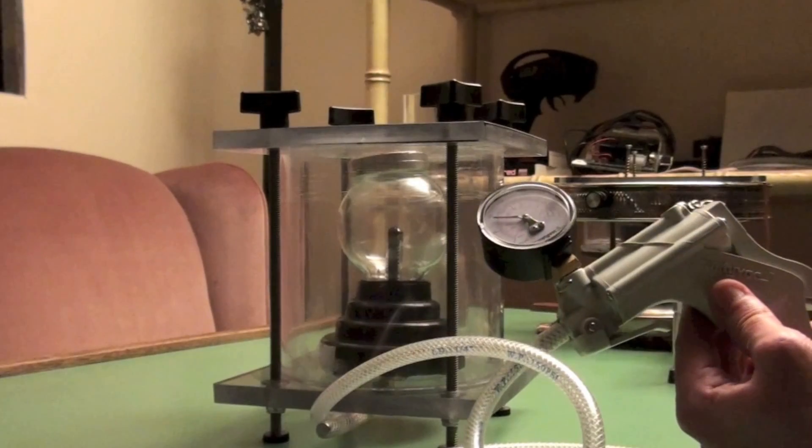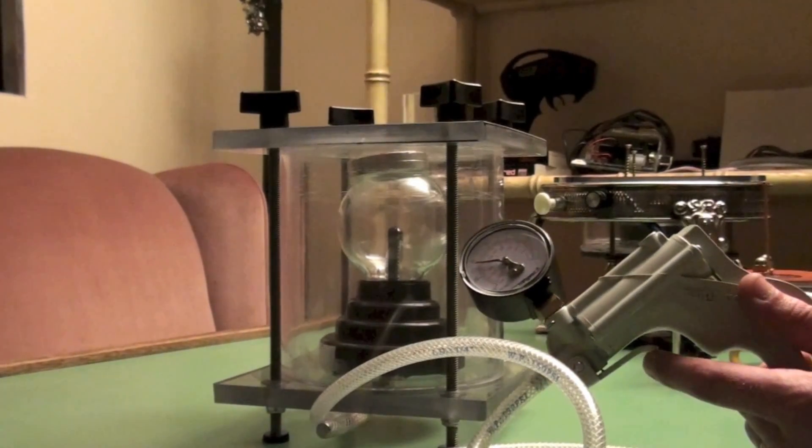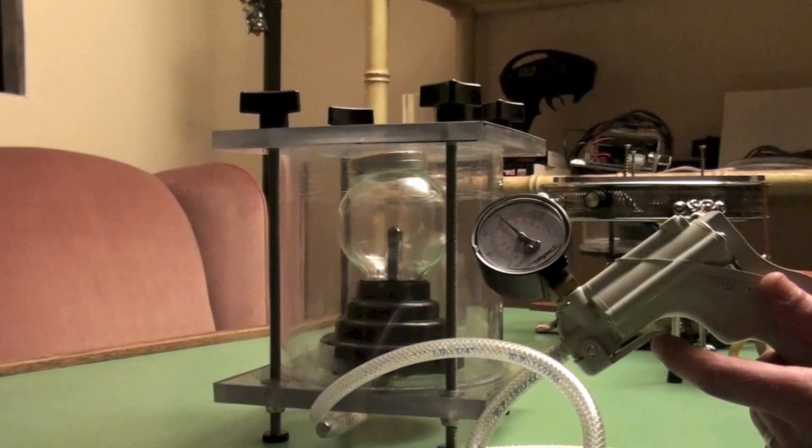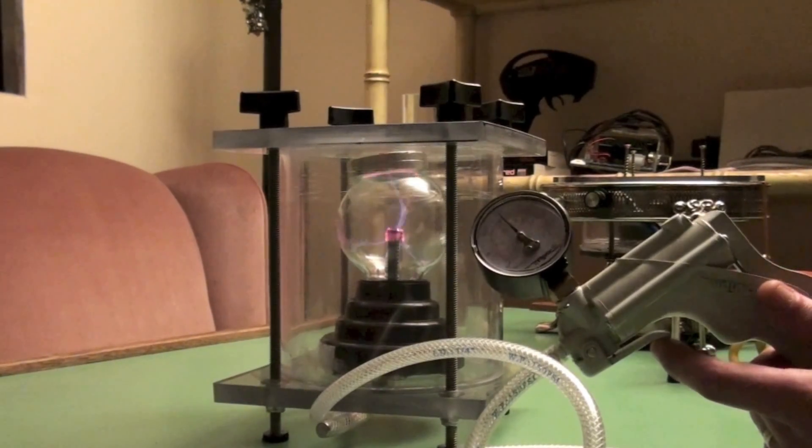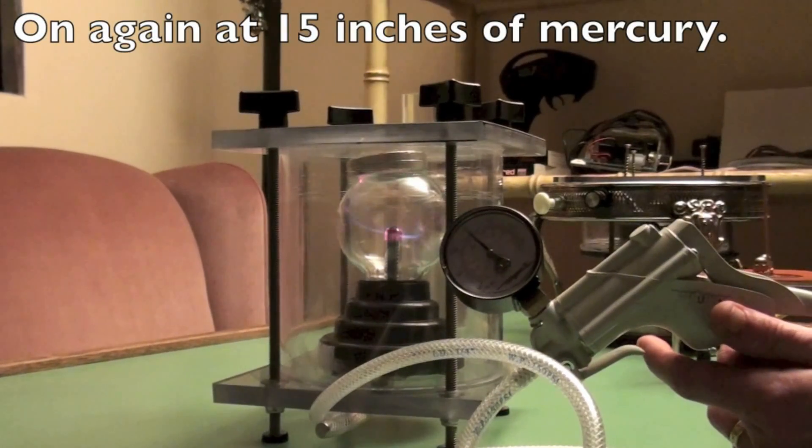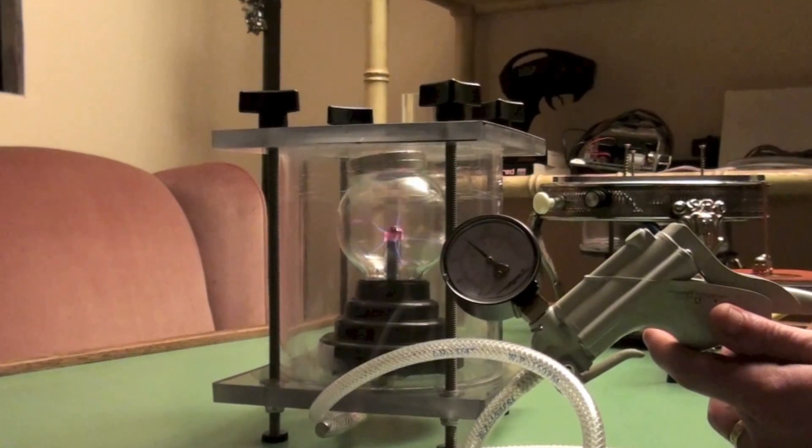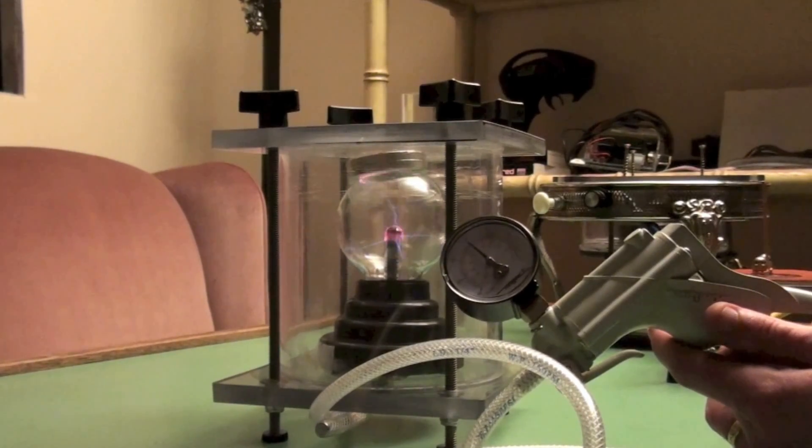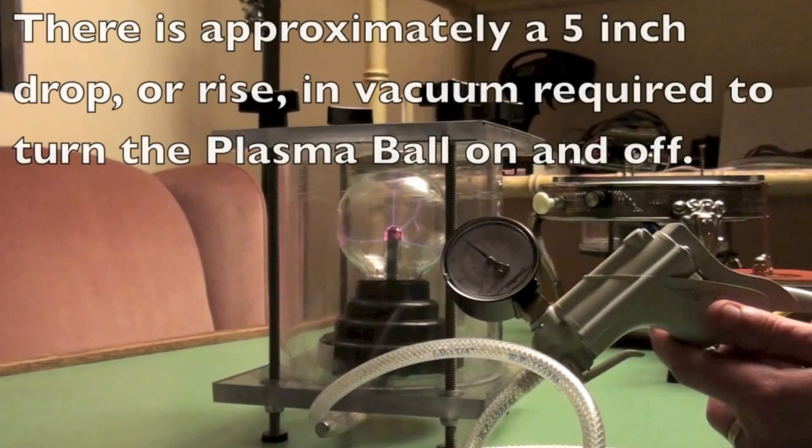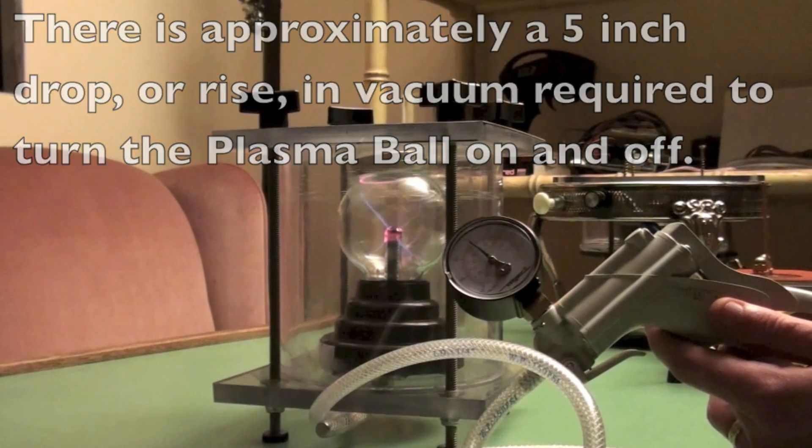That is a very strange phenomenon. We have a dead plasma ball. Well, let's see if we can bring it back to life. There it goes. So we're at fifteen this time instead of thirteen last time. So it's around the five inches of mercury range where this plasma ball cuts out, and then it won't cut back in again until it drops down five inches of mercury.